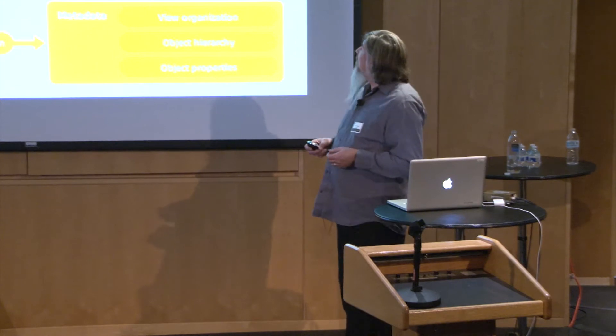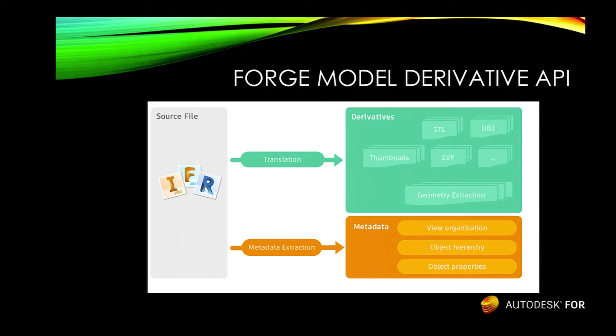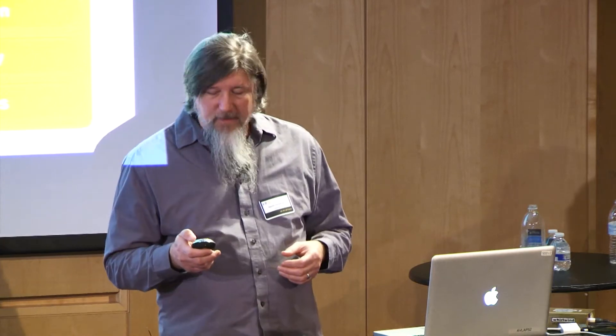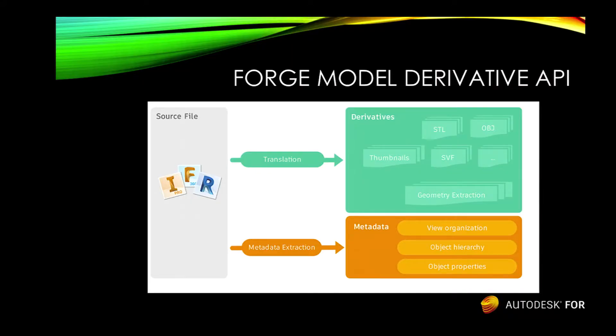The first piece of this is the Model Derivative API. Forge Model Derivative is designed to take any 3D format out there — we're supporting around 65 formats today — and translate it into something more lightweight. It's currently optimized for WebGL, and we have a viewer that lets you view that directly on the web. Model Derivative includes a translation phase that gives you derivatives from these different formats, including thumbnails and geometry extraction. Any original model metadata is maintained, so as long as the format supports that metadata, we extract it and include it in this lightweight form.